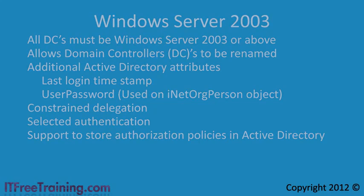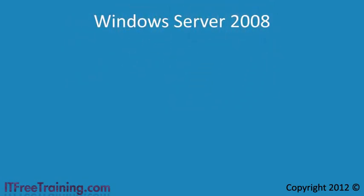The next domain functional level is Windows Server 2008. You may be wondering why there is no Windows Server 2003 R2 domain functional level. The reason is that the installation disks for Windows Server 2003 and Windows Server 2003 R2 are identical — the difference is that when you start R2 for the first time you are asked to insert Disk 2 to add additional R2 features. The difference between 2003 and R2 is basically some additional add-on software, with no significant difference to the way the operating system works or to Active Directory.